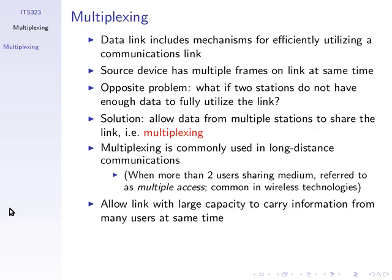What we know so far is how to get data across links — a link between one device and another device, usually a point-to-point link with just two devices attached. The problem with using a link between just two users is it can become inefficient. If we have a link that can support one megabit per second and there's only one source communicating to one destination, sometimes the source may have no data to send, so even though they pay for that link, sometimes they may use all of it, but other times they may have nothing or very little to send, which is an inefficient use of that link.